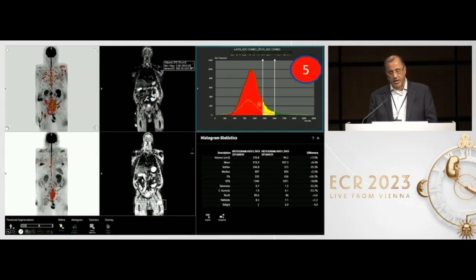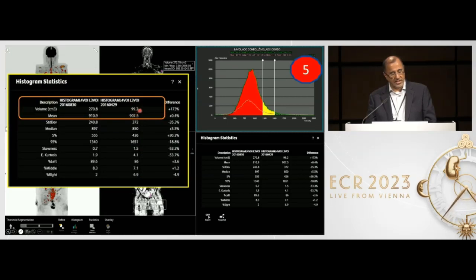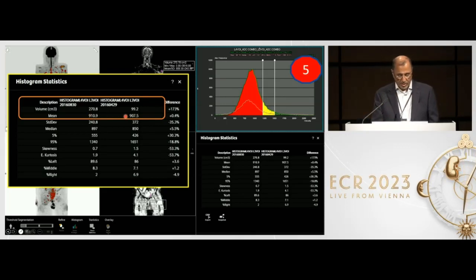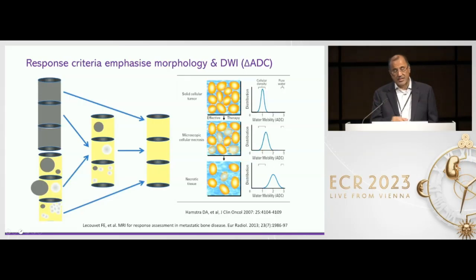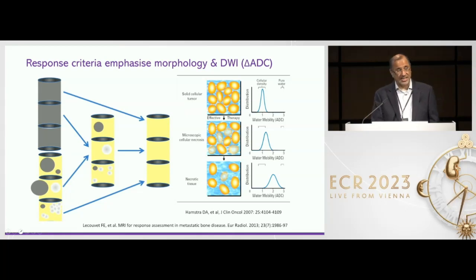Here is this patient's histogram — before and on treatment. You can see there's not much change in the ADC value. You can measure the volume: there's 99 cc of cancer before, 270 cc on treatment, but look at the change in the mean ADC — it's exactly the same, 907 micrometres squared per second and 910 micrometres squared per second. We approach response in a similar way, looking at morphology but also relying on the diffusion sequence and particularly the change in the ADC value.